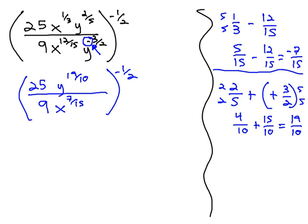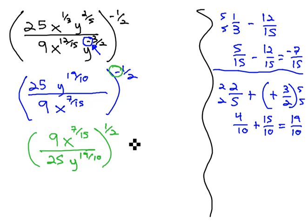Now that we've simplified in the parentheses as much as possible, we're ready to look at that exponent outside the parentheses, and I like to do it in two steps when the exponent is negative. First, let's take that negative exponent. Be very careful, a negative exponent will never make a number negative. Instead, a negative exponent flips a fraction over. It moves the 9x to the 7/15 to the numerator. It moves the 25y to the 19/10 down to the denominator. Still have the 1/2 outside.